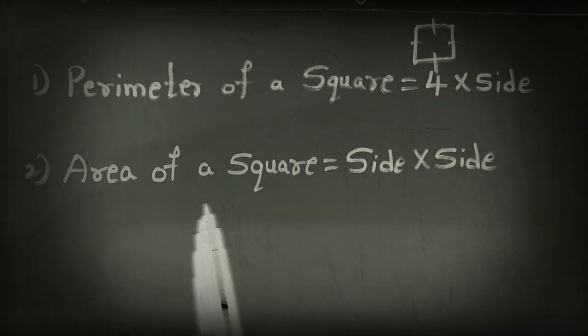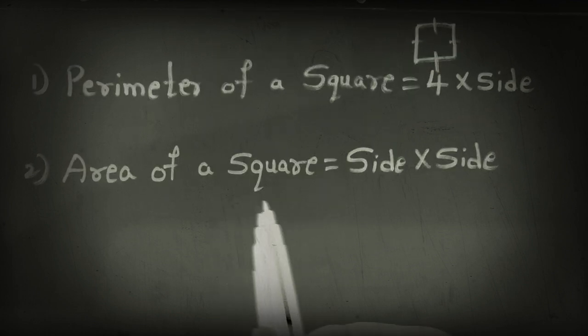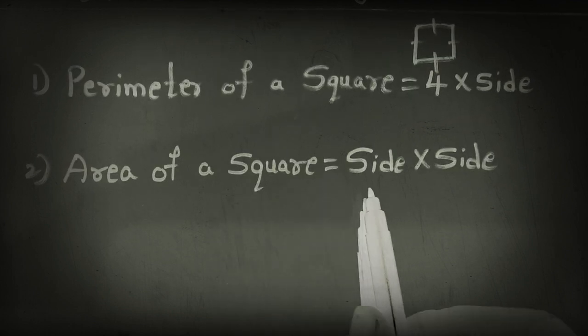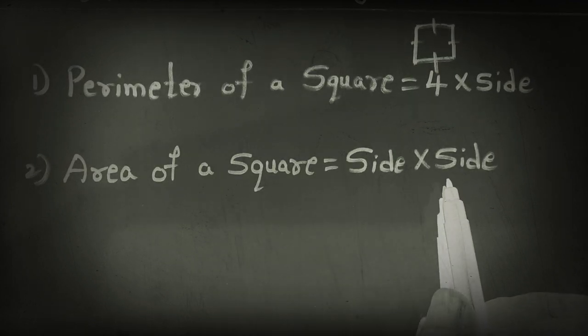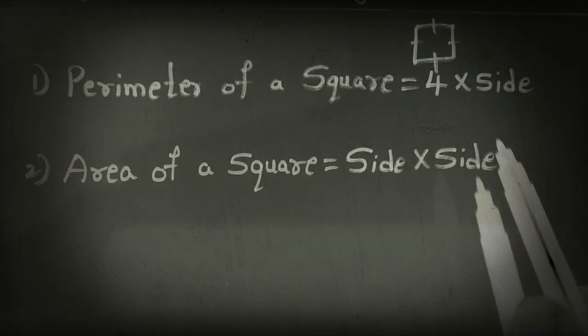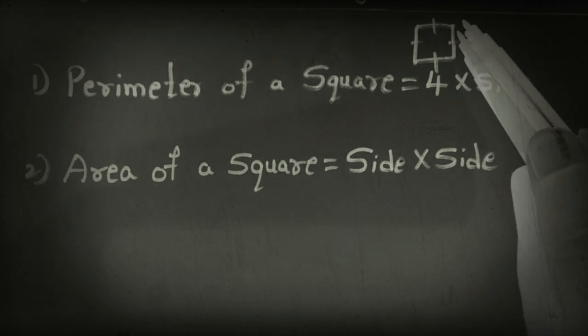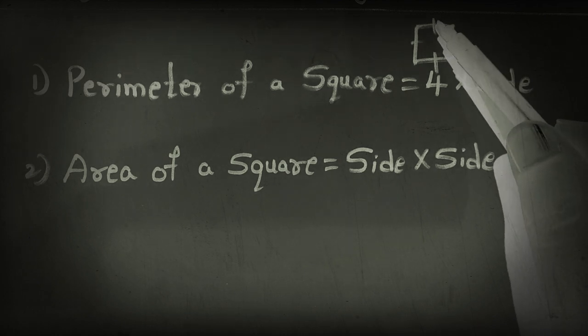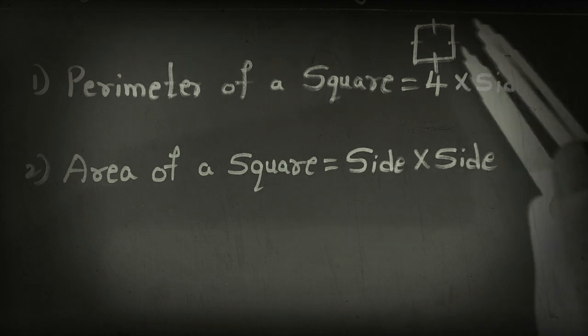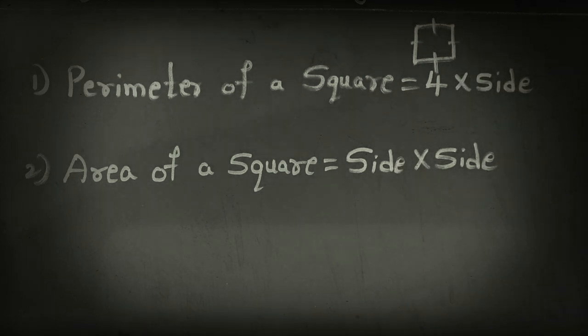Next one is area of a square. The area of the square is side into side. We have to multiply the side into side — means the same number we have to multiply 2 times, like a square number.